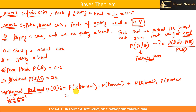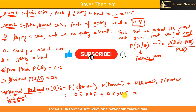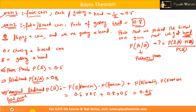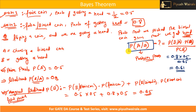Now for the calculation: P(head|fair coin) = 0.5, P(fair coin) = 0.5, P(head|bias coin) = 0.8, P(bias coin) = 0.5. So marginal likelihood = (0.5 × 0.5) + (0.8 × 0.5) = 0.25 + 0.40 = 0.65. Now putting all values into the formula: posterior = (0.8 × 0.5) / 0.65 ≈ 0.61. This result is the posterior probability.